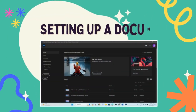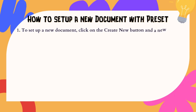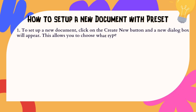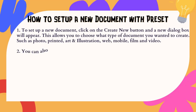Setting Up a Document. How to Set Up a New Document with Preset: 1. To set up a new document, click on the Create New button and a new dialog box will appear. This allows you to choose what type of document you want to create, such as photo, printed, art and illustration, web, mobile, film, and video.